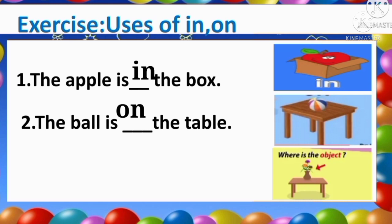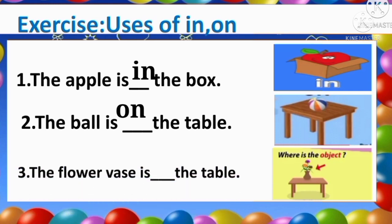Next picture: where is the object? We can see a flower vase and a table. Read number three: The flower vase is blank the table. We can see the flower vase touches the table, so it will be 'on'. The flower vase is on the table. 'On' is telling about the flower vase — where the flower vase is.